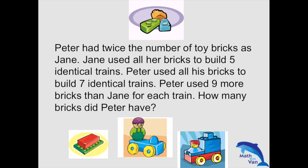Peter had twice the number of toy bricks as Jane. Jane used all her bricks to build 5 identical trains. Peter used all his bricks to build 7 identical trains. Peter used 9 more bricks than Jane for each train. So how many bricks did Peter have?